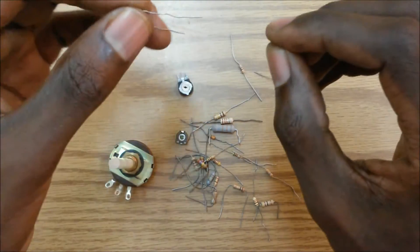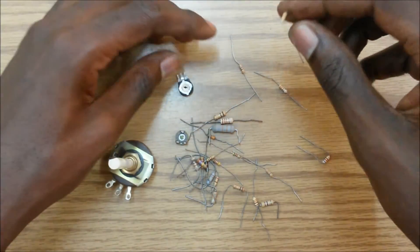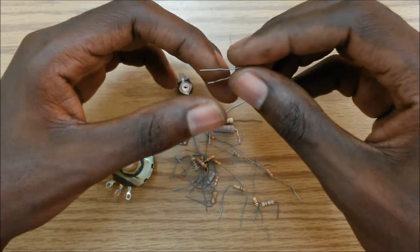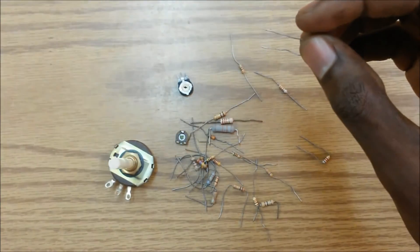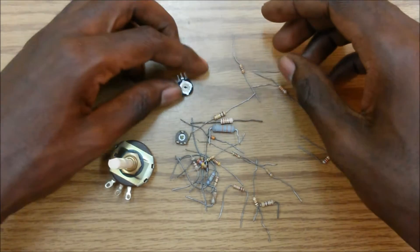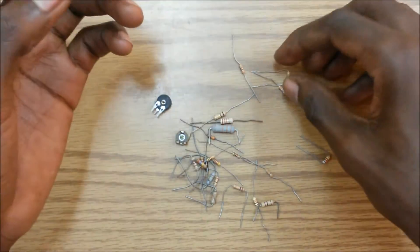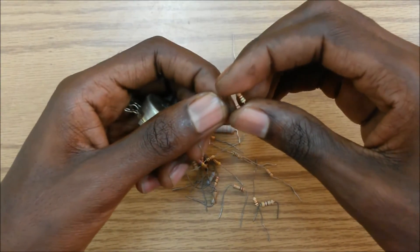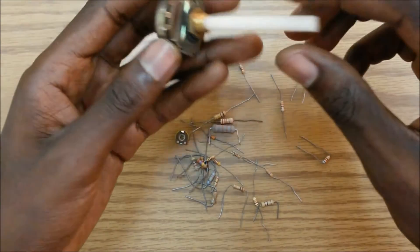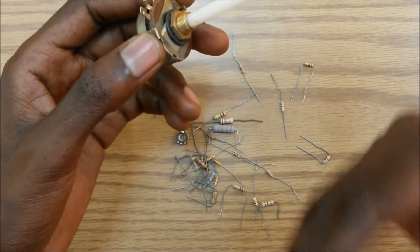Now there are two types of resistors which we want to focus on, and these are fixed resistors, which are most often used in electronic circuits, and then there are variable resistors like these ones here. A fixed resistor will offer a fixed resistance to a circuit, while a variable resistor will offer a varying range of resistance to a circuit.